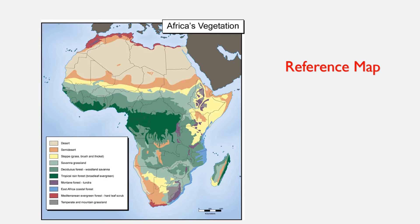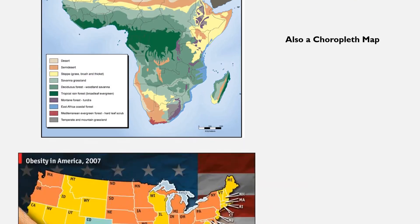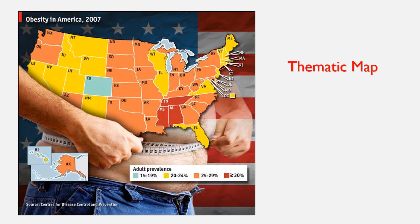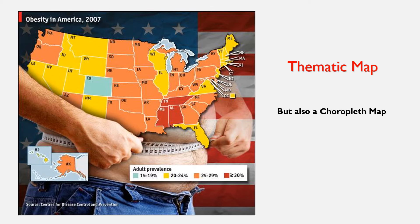It is showing us the vegetation, but it's not giving us actual data about that vegetation. How is it showing these different climates? Through color — so it's also a choropleth map. How about the obesity map? It's thematic, and how is it showing the data? It's showing it in color, so it's going to be a choropleth map.